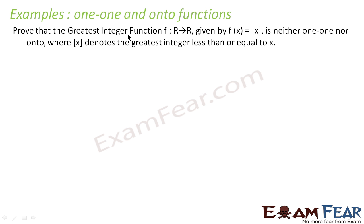Let's take one more example. We have to prove that the greatest integer function from R to R, given by f(x) = [x], is neither one-one nor onto, where [x] denotes the greatest integer less than or equal to x. So, the domain is R and the codomain is also R.